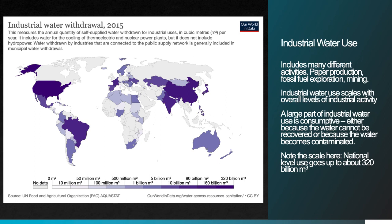We'll look at three major categories of water use: industrial, agricultural, and municipal. Industrial water use includes many different activities — paper production, fossil fuel exploration where water is injected into subsurface environments to increase production, and mining for cleaning rock or extracting materials. Globally, industrial water use scales with the overall level of industrial activity, so you see high rates in places like the US and China. A large part of industrial water use is consumptive, either because the water cannot be recovered or becomes contaminated. The national level use on this graph goes up to about 320 billion cubic meters.